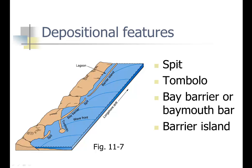Looking at depositional features, we get spits. Waves come in, so longshore current is moving sand along the beach. If it reaches a deeper area, the waves lose energy, the sand drops, and it starts filling in the area. More sand comes in, and pretty soon it's at the top and starts moving across the bay. If it goes to the other side we call it a bay barrier or bay mouth bar.